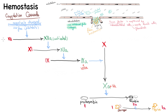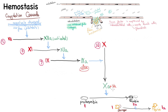To remember the order, the factors count from 12 to 10, except 9 and 10 are swapped. Remember that factor 9 goes with factor 8 as its cofactor — they are right next to each other — and factor 10 goes with factor 5, easy to remember because 5 is half of 10. So far this was the intrinsic pathway.